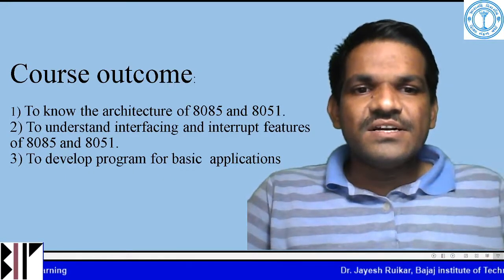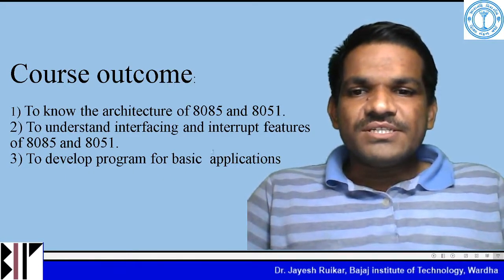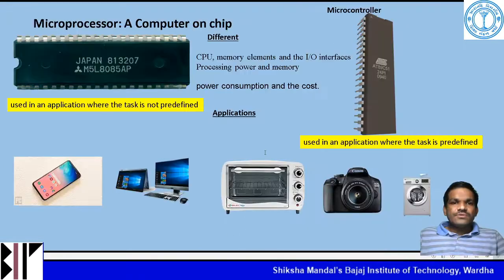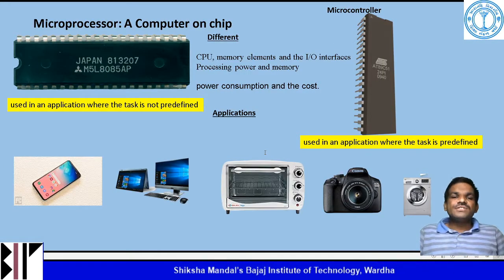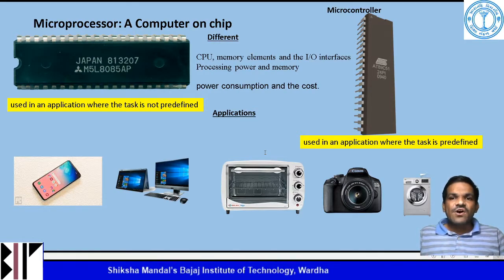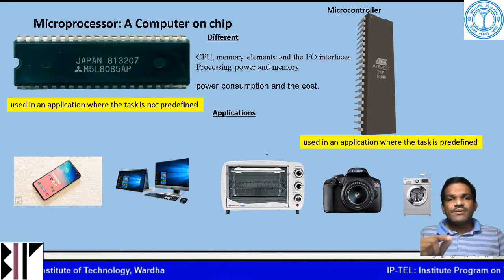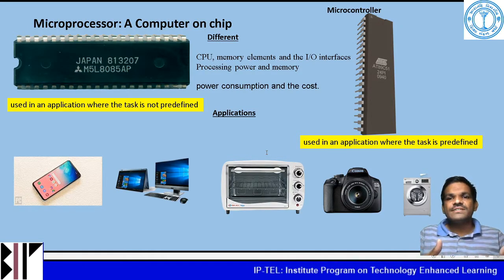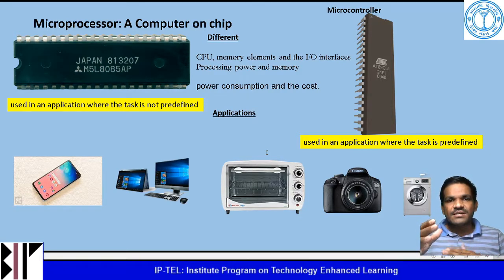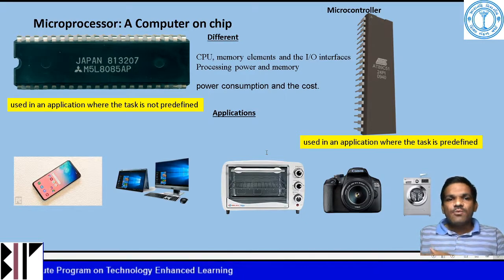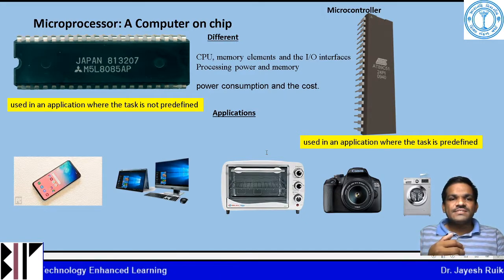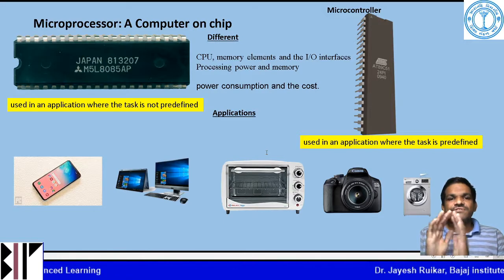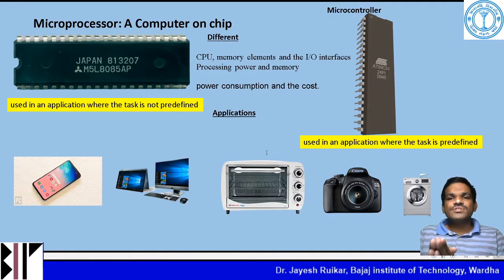The application of this course is in industries, in the research field, and also in commercial field applications. A microprocessor is called a computer on a chip and it is fabricated on a single integrated circuit. The main job of the microprocessor is to take information as input from input devices, process it, and based on the directions provide the output to the output devices.